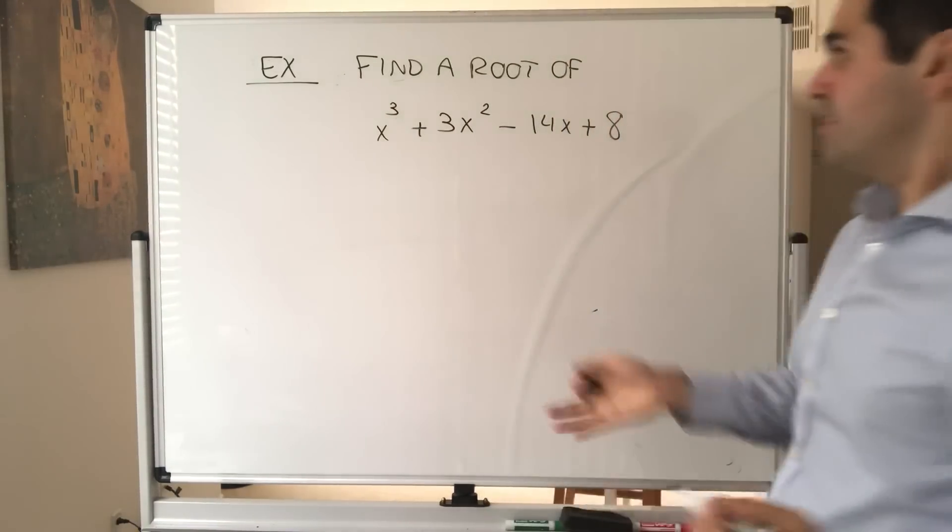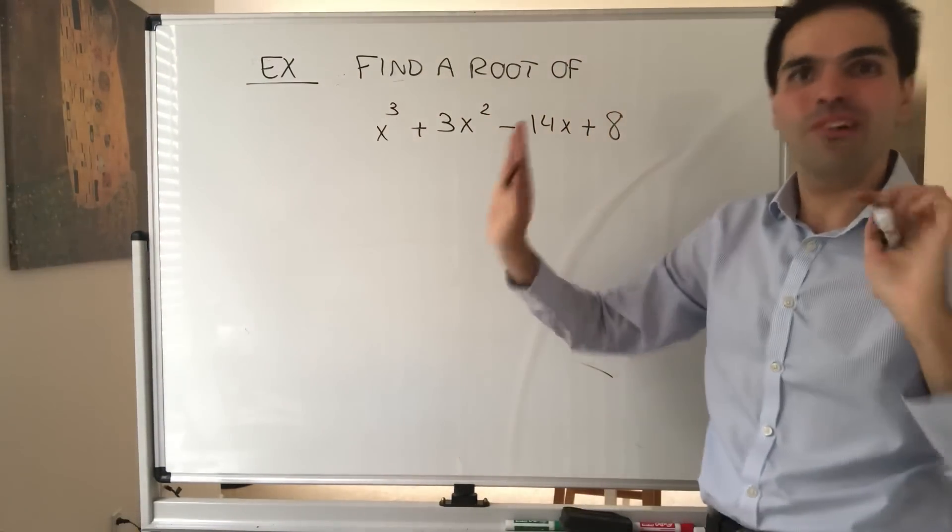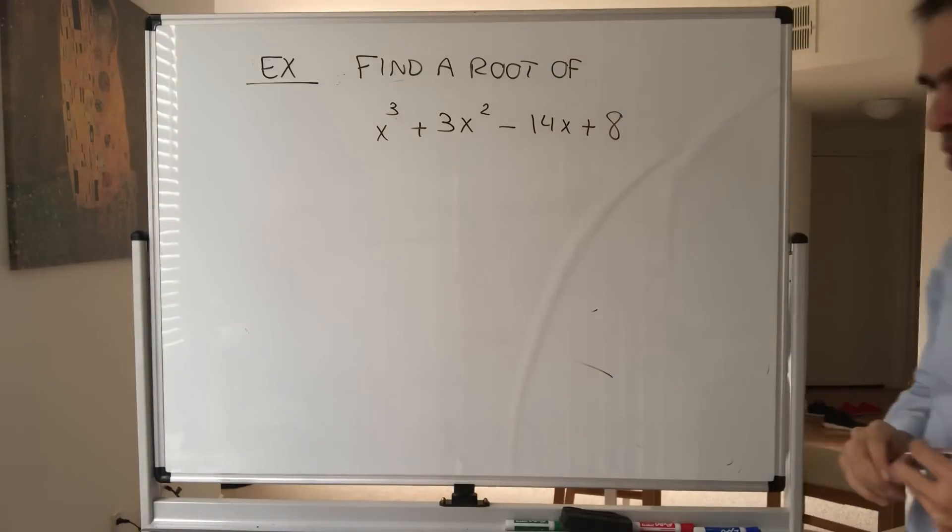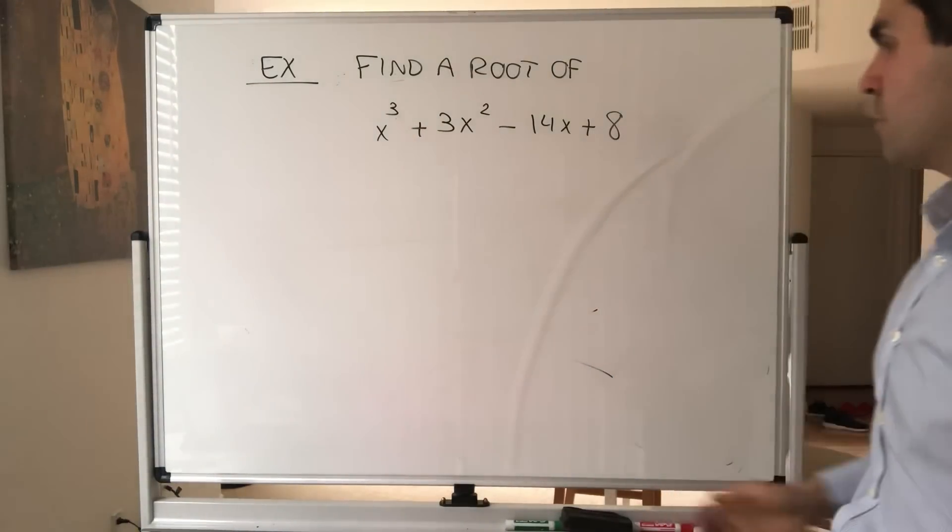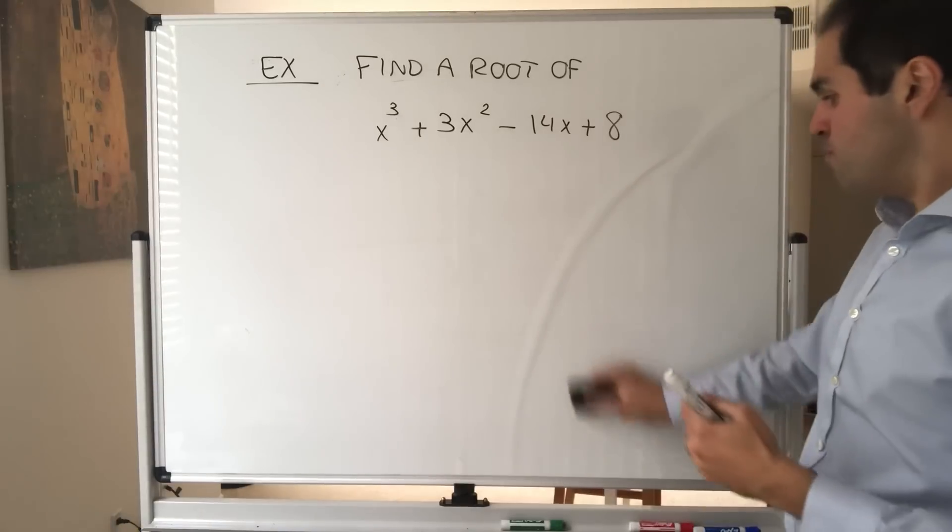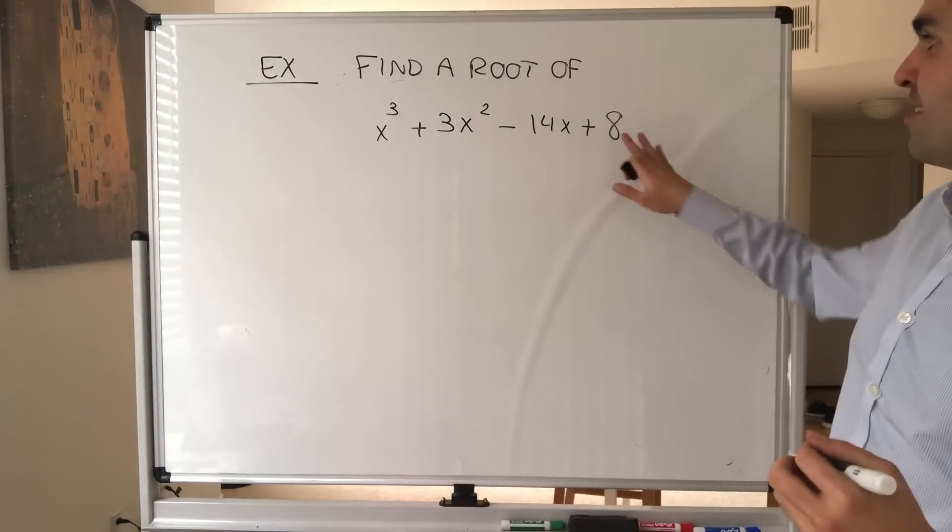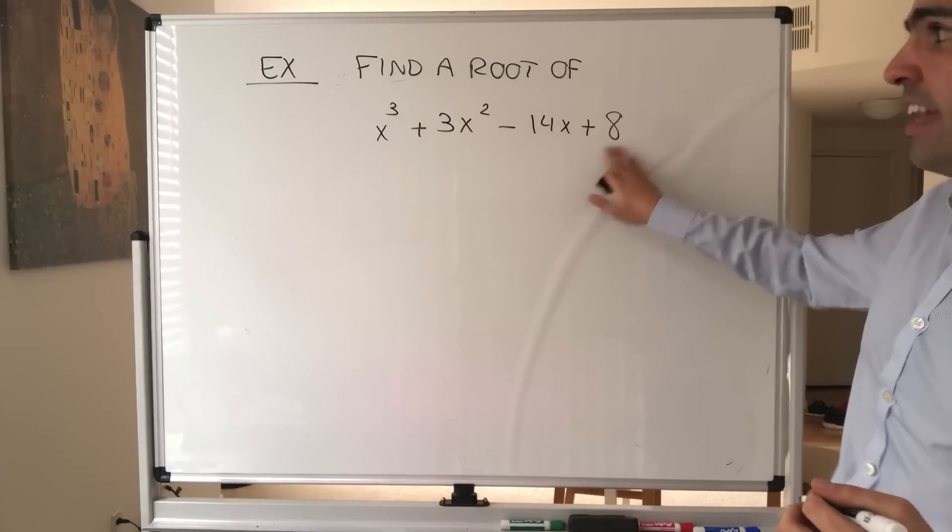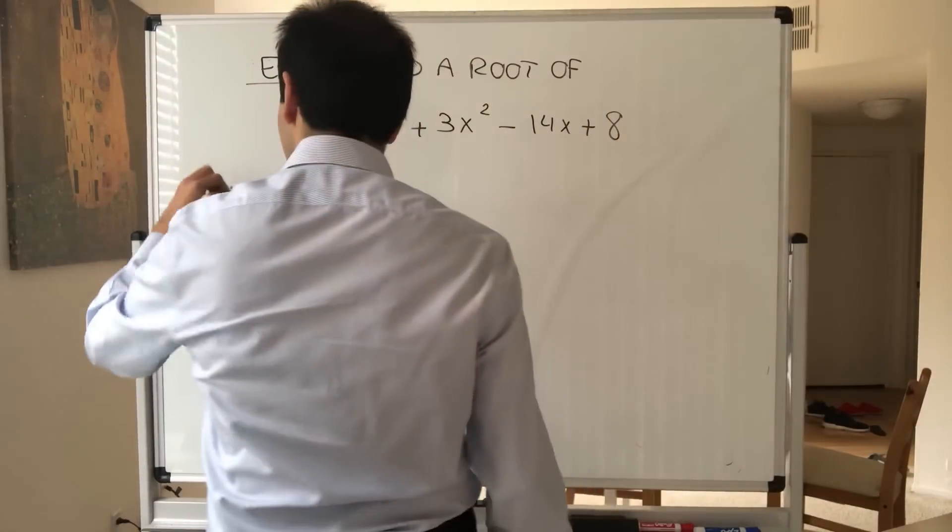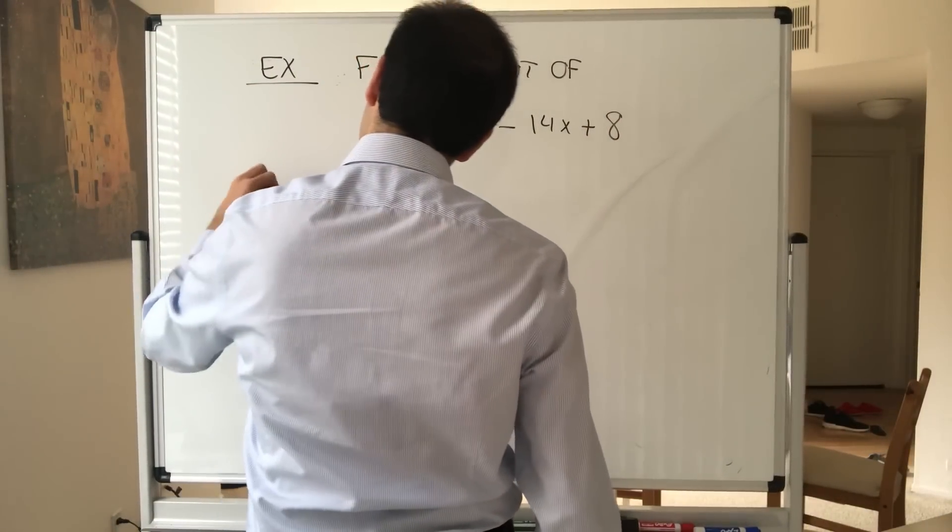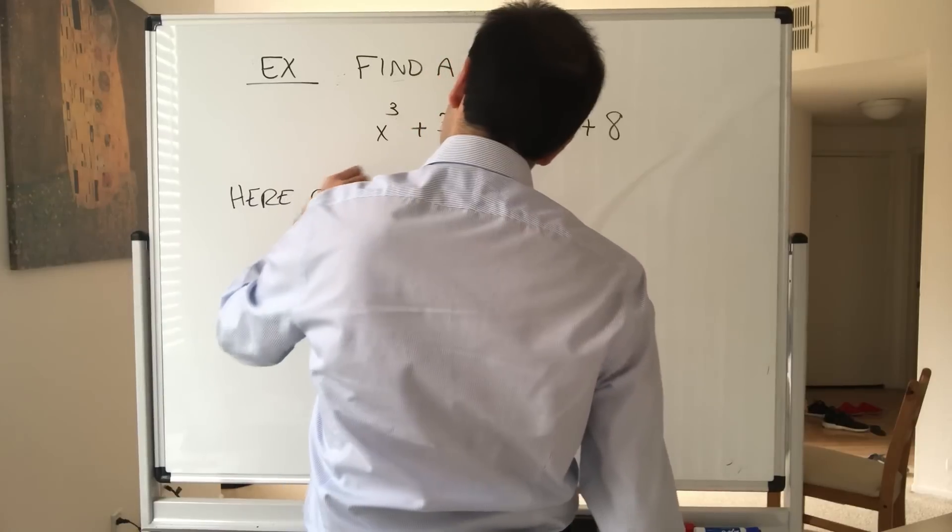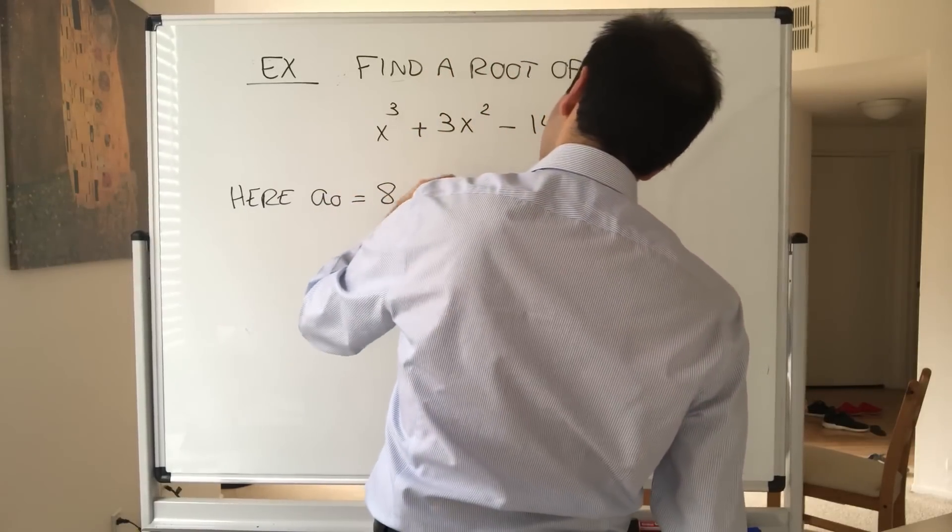Let's find a root of x³ + 3x² - 14x + 8. Now this is not a quadratic polynomial, so you can't use the quadratic formula. It's a little bit harder, but let's see if maybe we can apply the rational roots theorem to this. Notice the constant term is 8 and the leading term is 1. So here, a₀ is 8 and a₃ is 1.